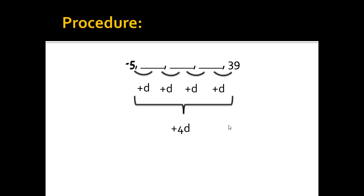And from here, I know that if I start at negative 5 and I add four of those common differences, I'm going to get 39. Well, this sets up a really simple equation, and really all we need to know here is what our common difference is, which we call d, and we have the problem pretty much solved for us.